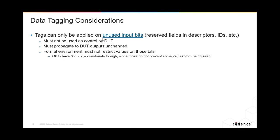Considerations when using data tagging — and this tells you why it's not easily automated if at all — tags can only be applied to unused input bits, such as reserved fields, IDs and so on. It cannot be used as values in the control path of the DUT because that will affect its behavior. That value must be able to propagate to the DUT outputs unchanged, and a formal environment must not restrict values on those bits.